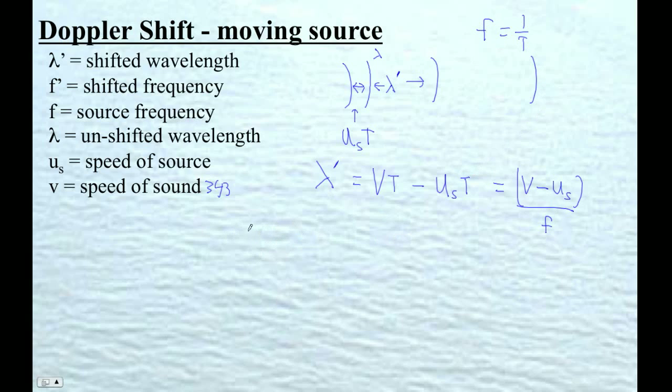And then of course the frequency is going to be frequency is velocity over wavelength. I'm using the formula v is f lambda. So therefore frequency would be v over lambda. So the shifted frequency would be that over the shifted wavelength.